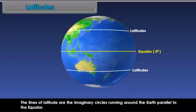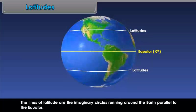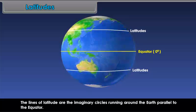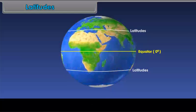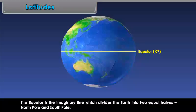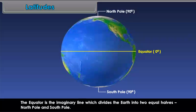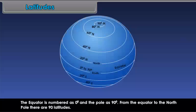The lines of latitude are imaginary circles running around the earth parallel to the equator. The equator is the imaginary line which divides the earth into two equal halves, north and south. The equator is numbered as zero degrees and the pole as 90 degrees. From the equator to the north pole, there are 90 latitudes.